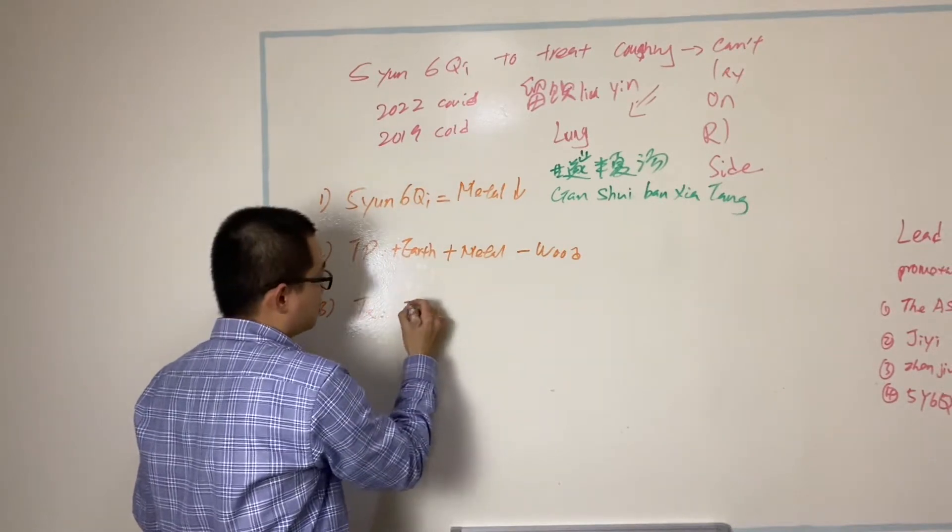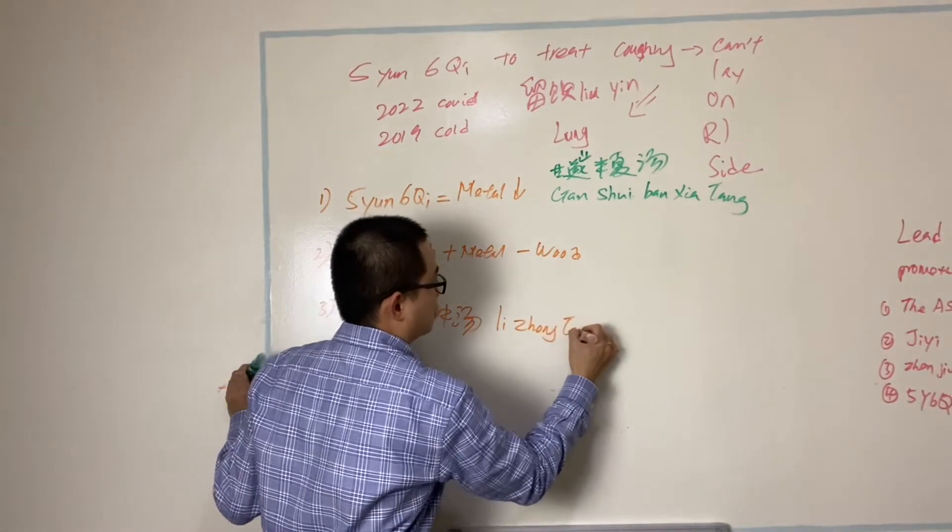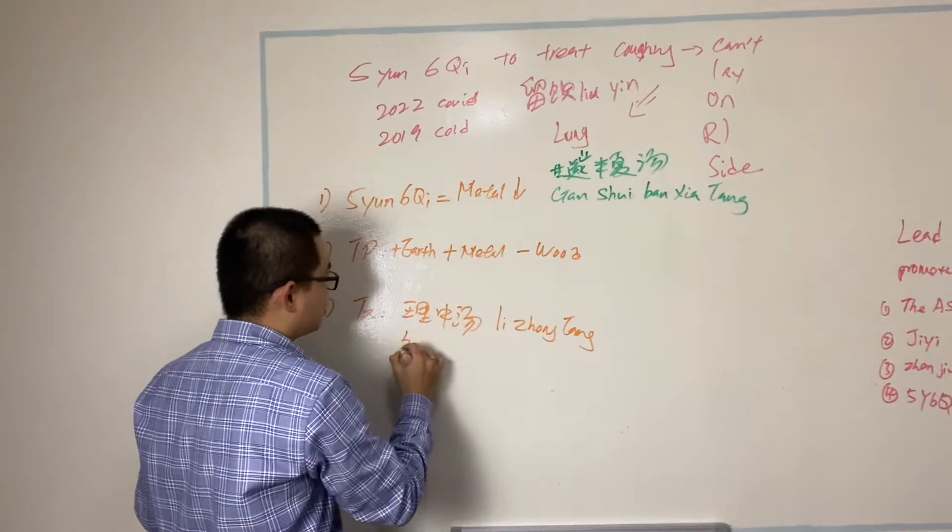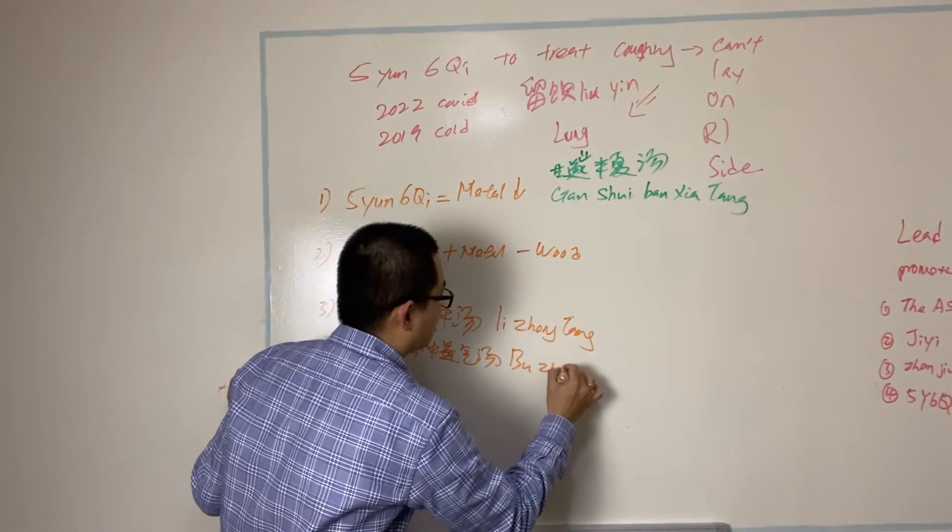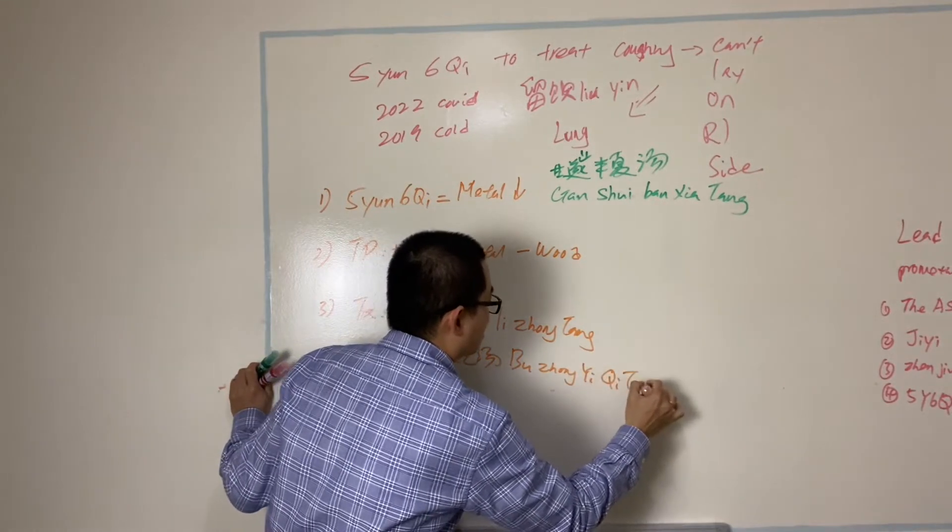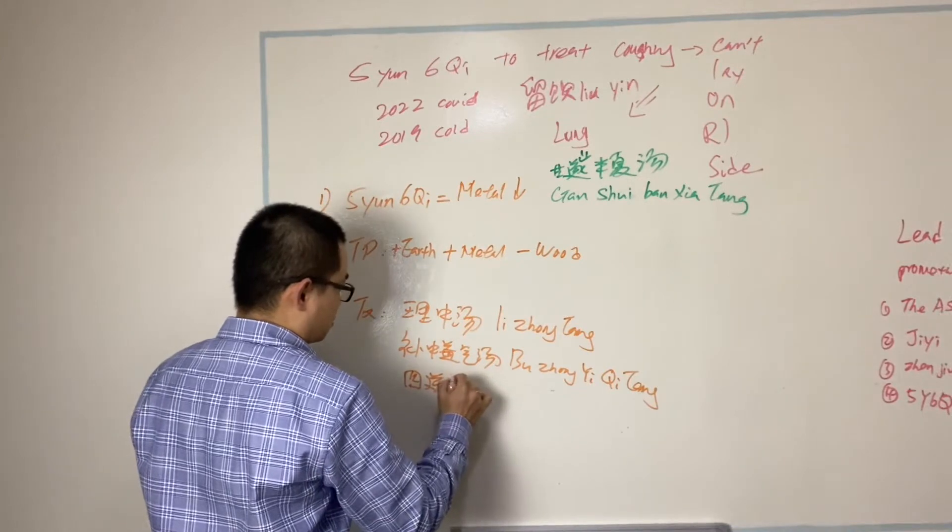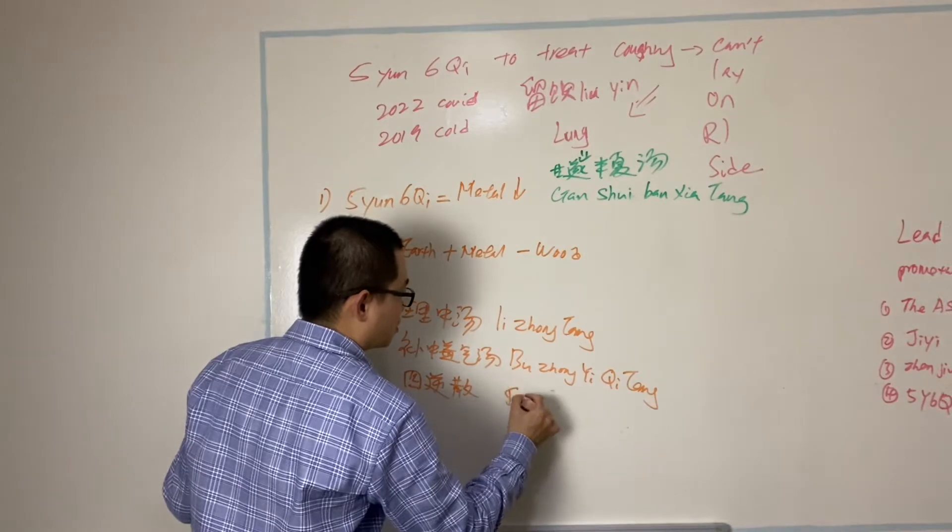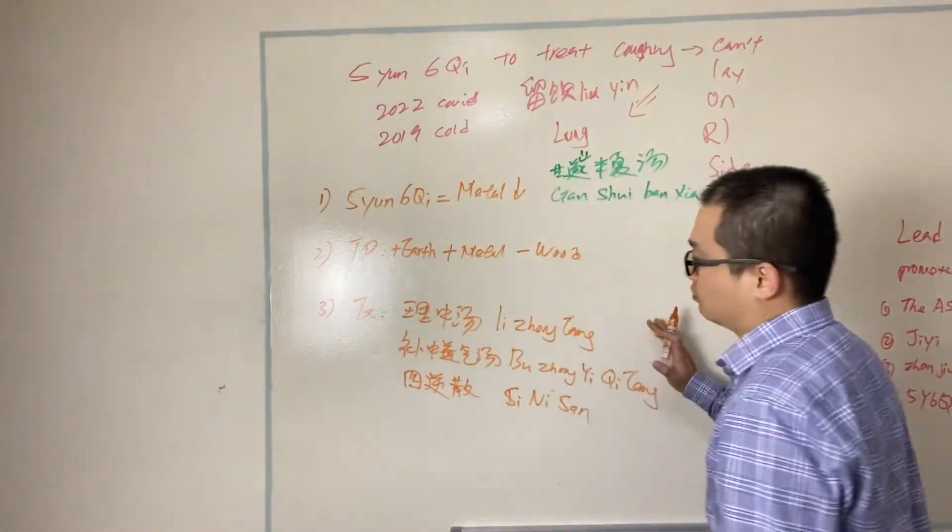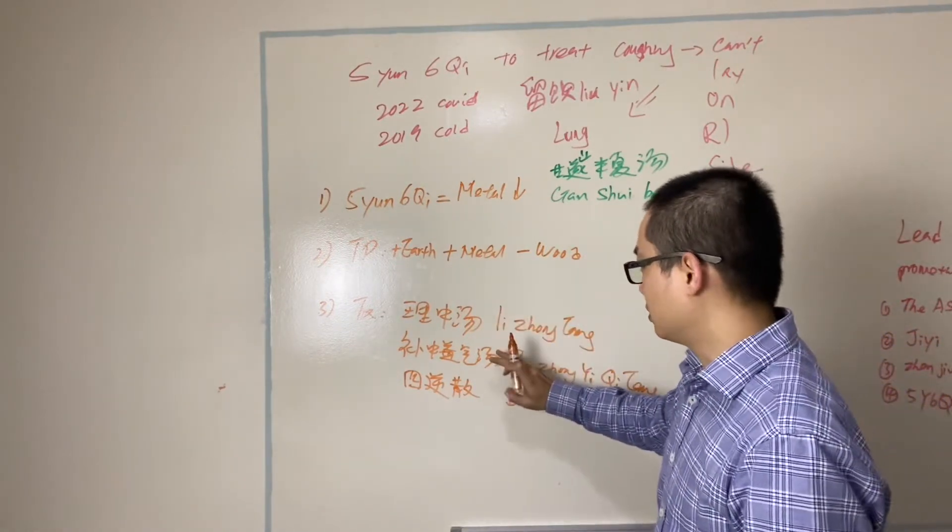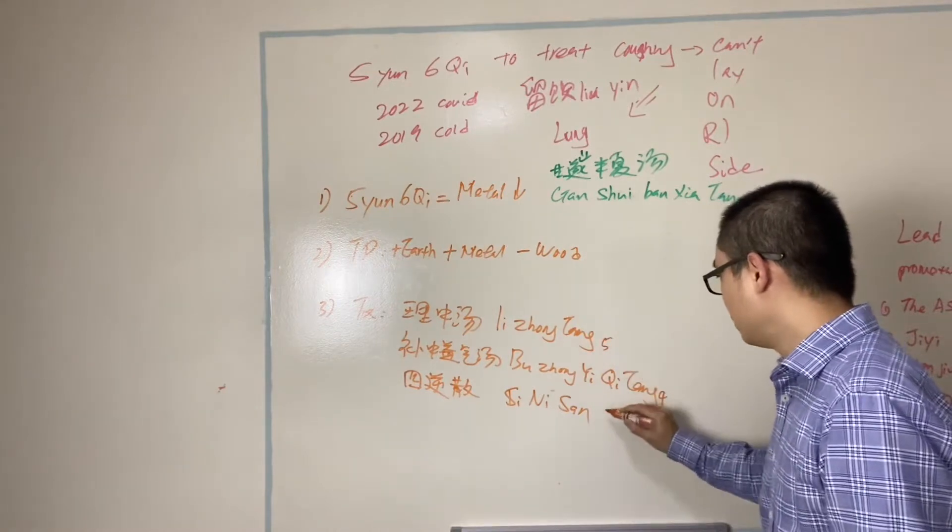Treatment, we choose herbs. Tonify earth, we use Li Zhong Tang formula. Tonify metal, we choose Bu Zhong Yi Qi Tang. Reduce wood, I use Si Ni San. This is classic formula. Those two from Shang Han Lun. This one's not from Shang Han Lun. Then the ratio over here, very important. Five, four, three.